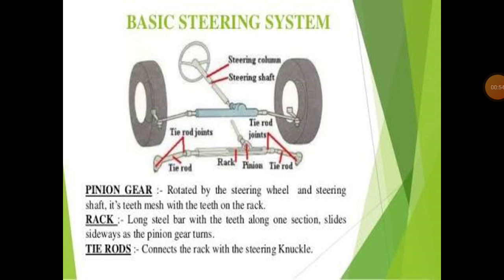The basic components of a steering system include: a steering column, steering shaft, tie rod joints, tie rod, and rack and pinion. These are the main components used in a simple steering system.